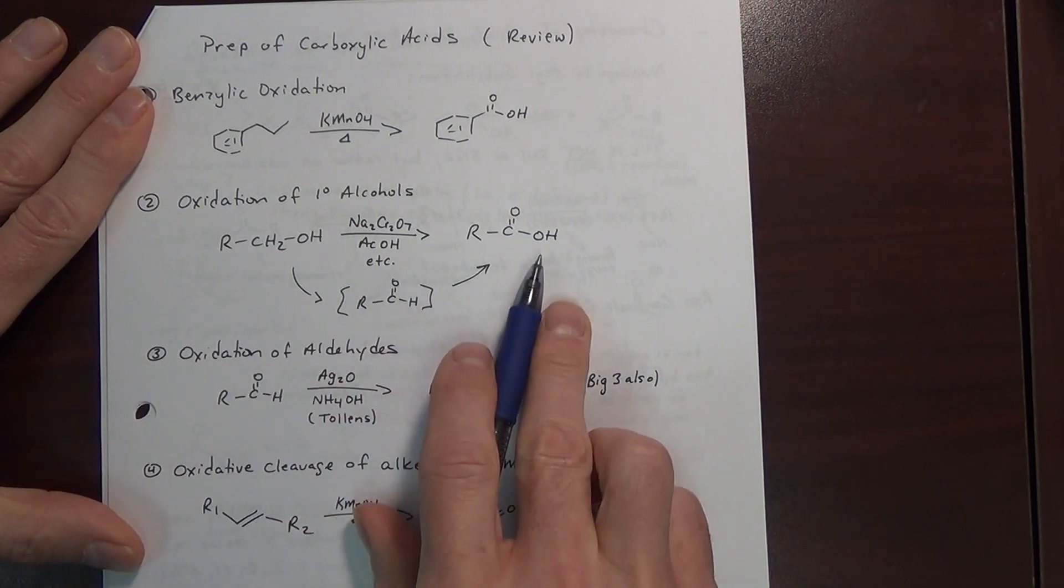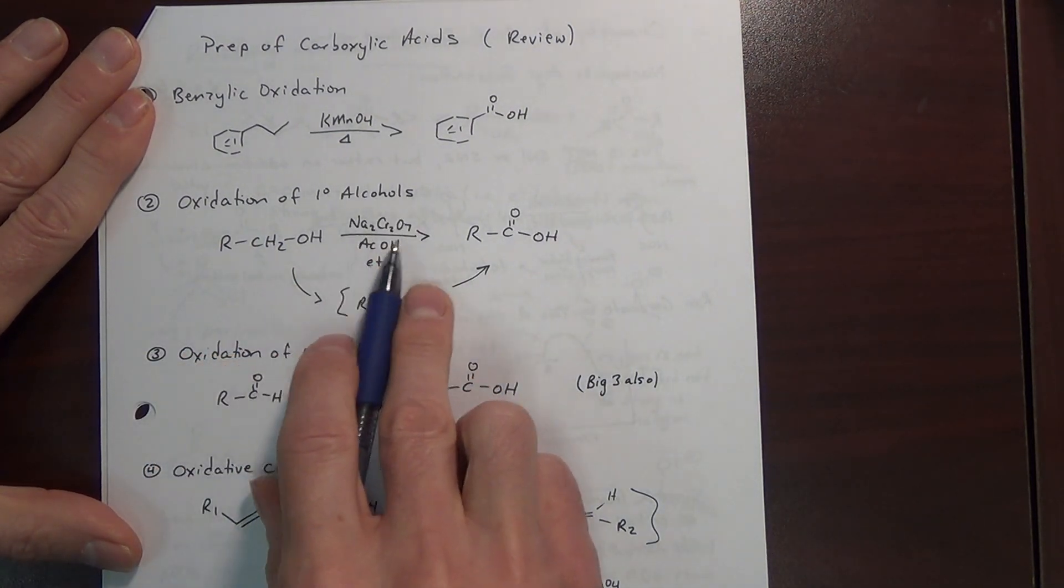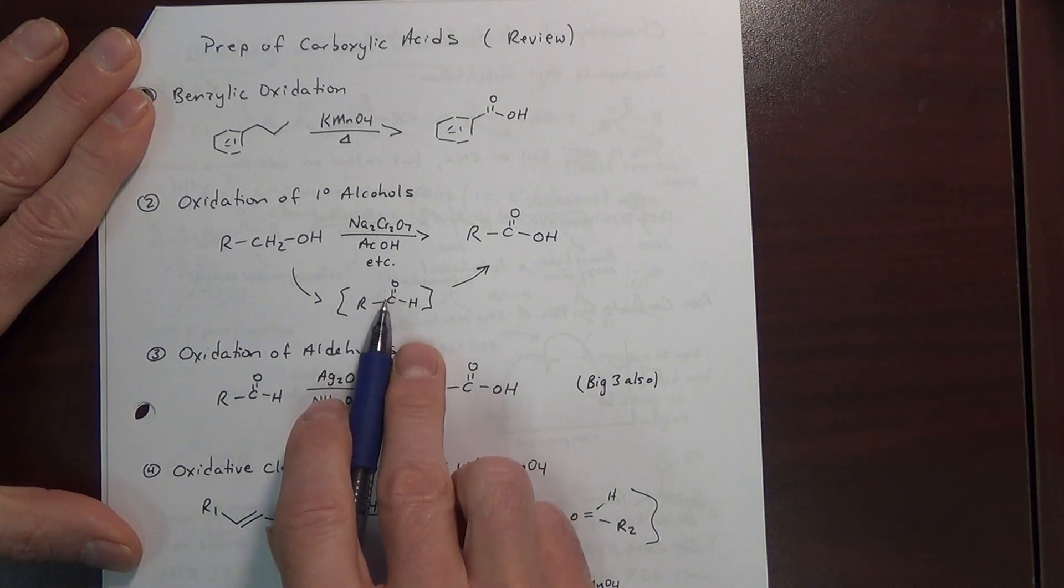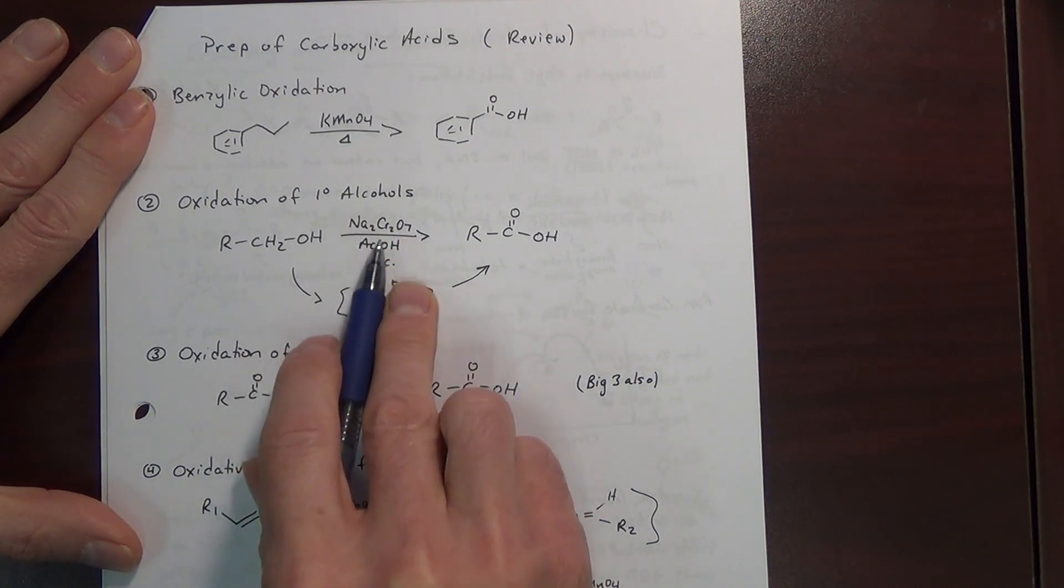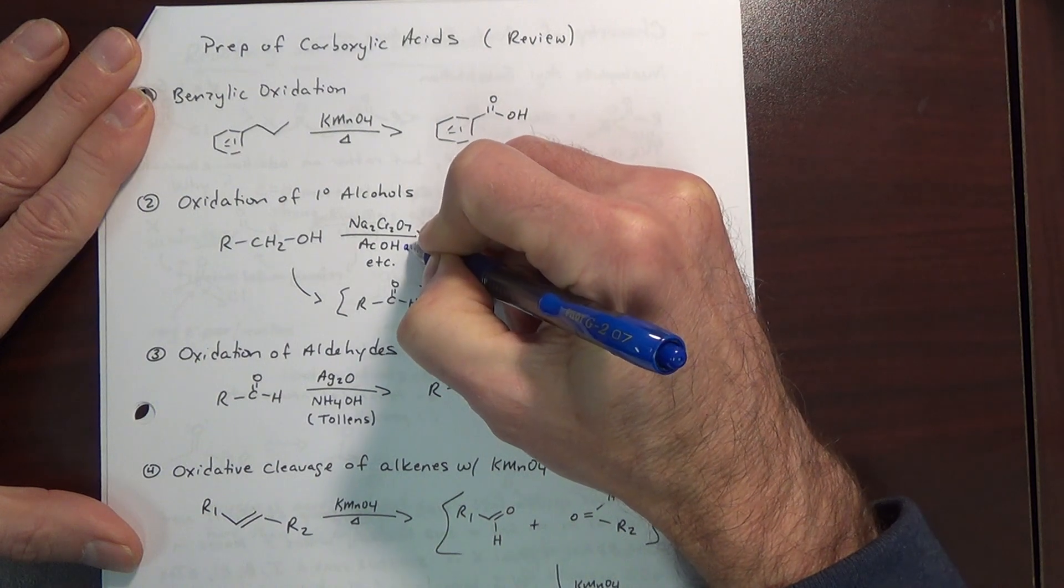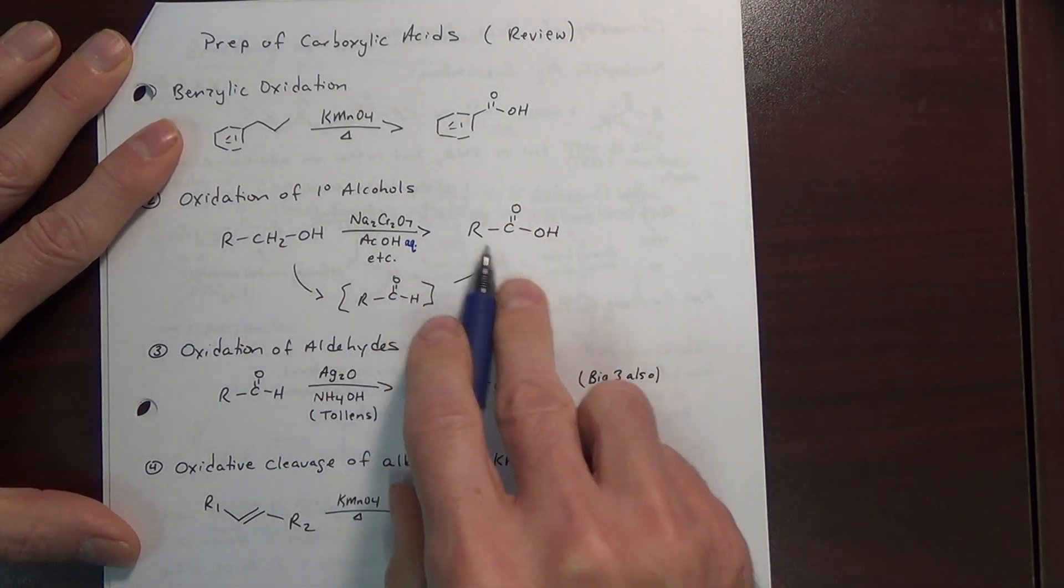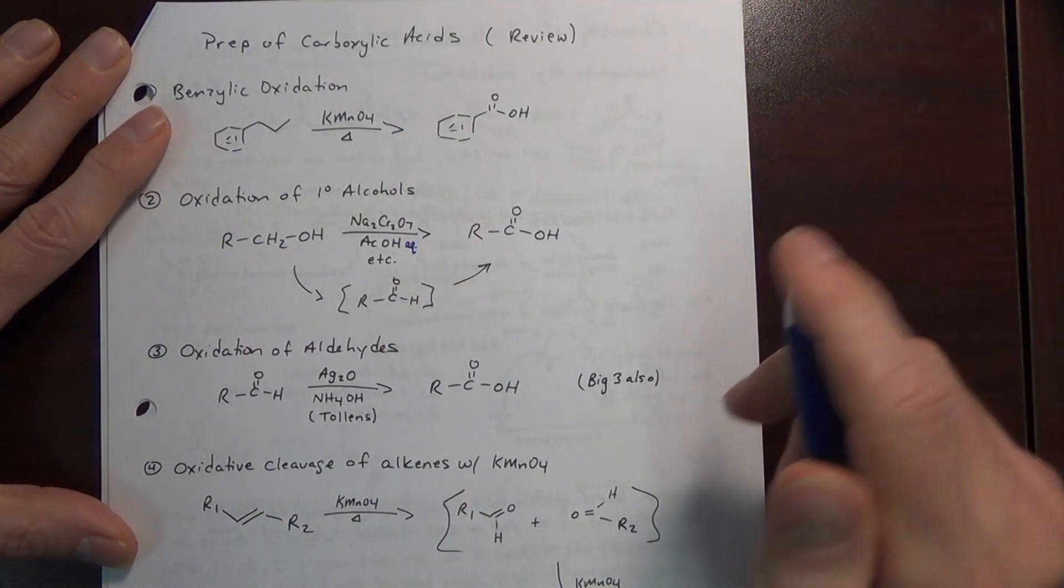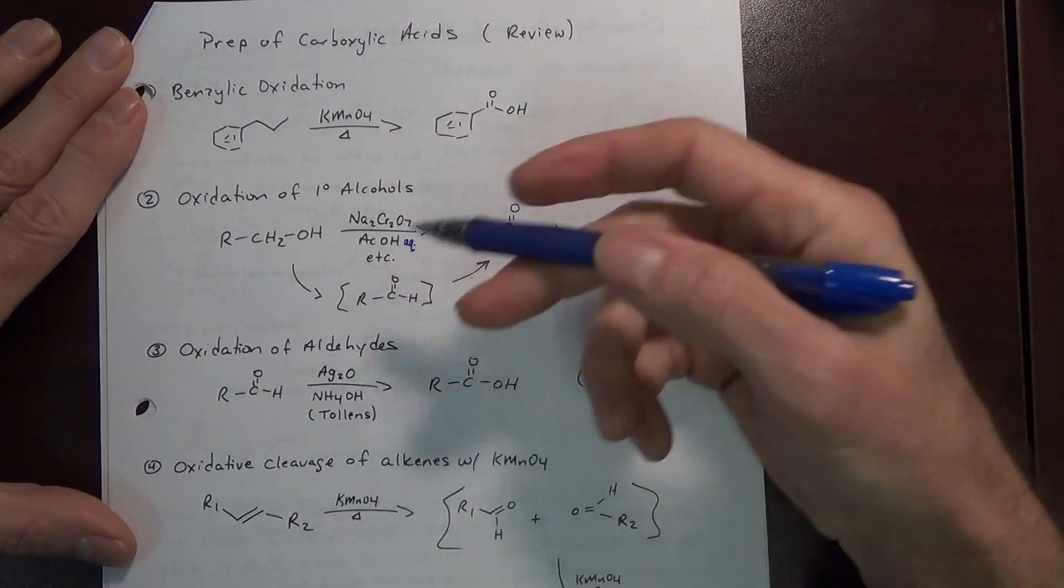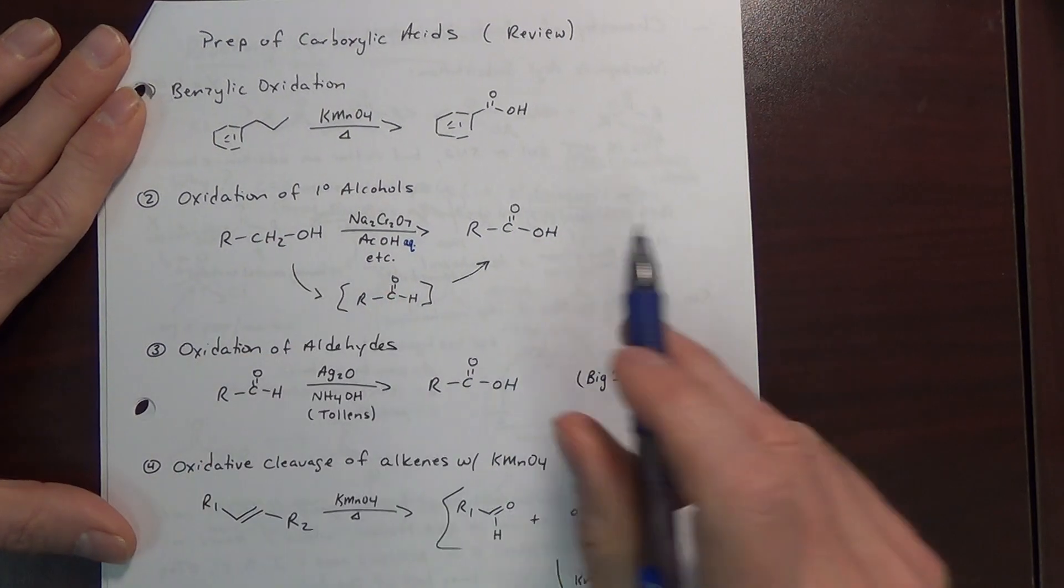A second way that we've seen previously in making carboxylic acids is to oxidize a primary alcohol. Again, with one of the big three. And we also know that the intermediate here is the aldehyde. It's not isolated when you use the big three. And typically we also need water here. The ultimate outcome here is the carboxylic acid. That's actually one of the most common ways to prepare carboxylic acid, is oxidation of a primary alcohol.